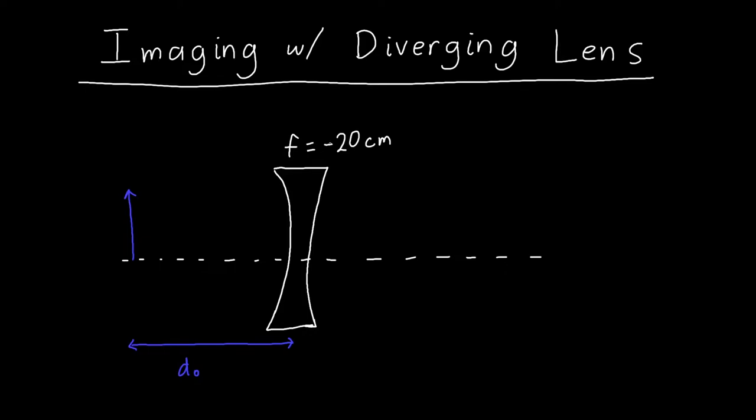Let's say that our object distance is 40 centimeters away from the lens. So our object is real, it's on the left-hand side of the lens, it's got a positive value. Our lens is diverging, it's got a negative focal length.